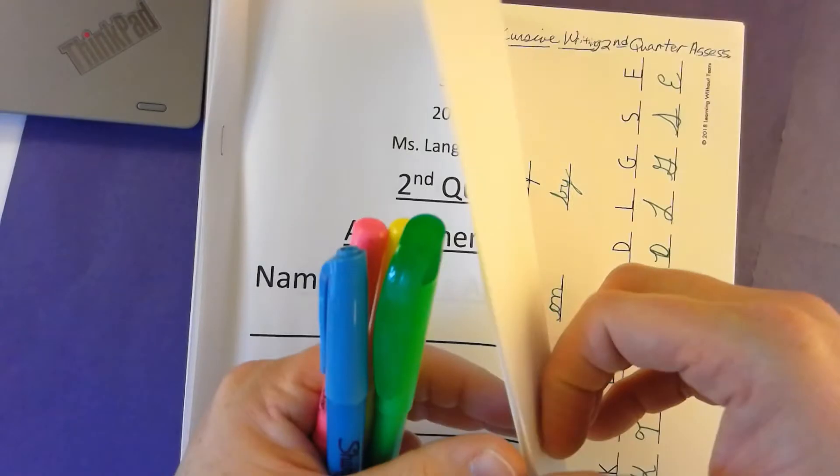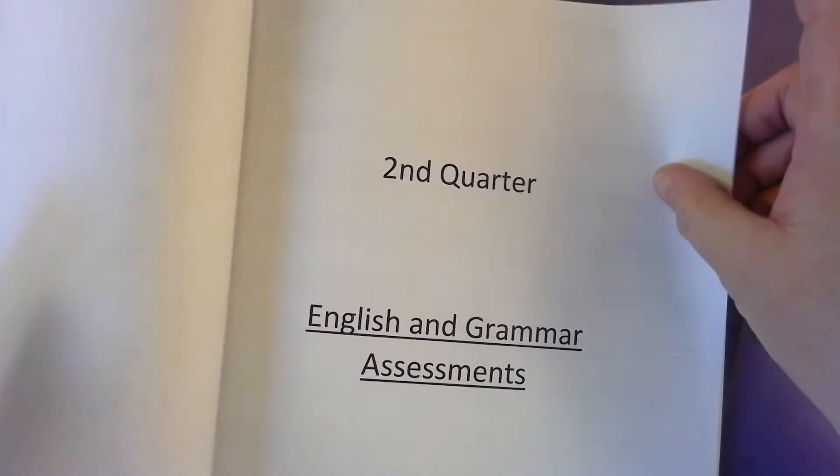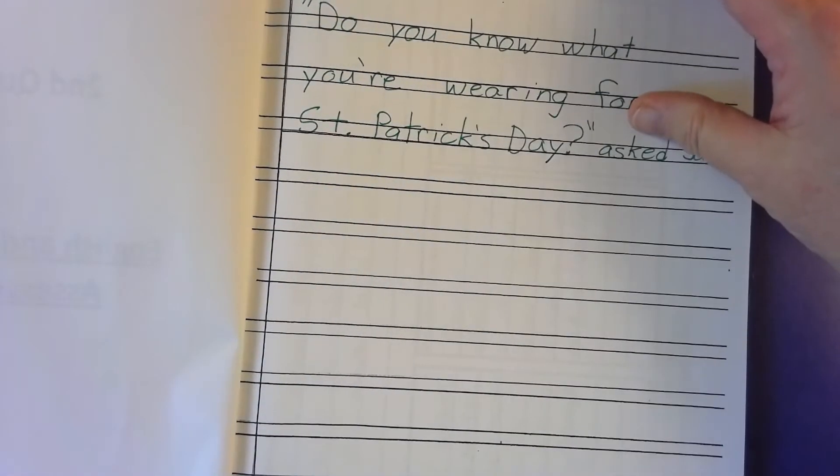Turn the page — we're not doing the handwriting right now. Turn the page again. Here's your English and grammar assessment, this is your dictation, and then this page right here that says 'opinion writing' — second quarter, opinion writing. Then it's a tabletop.